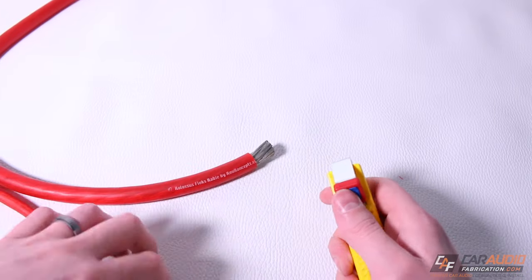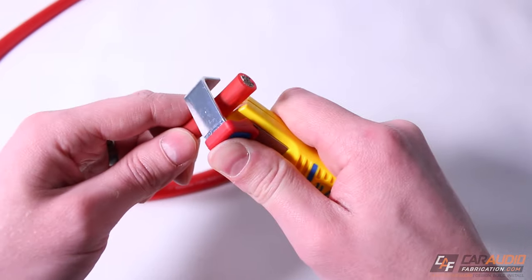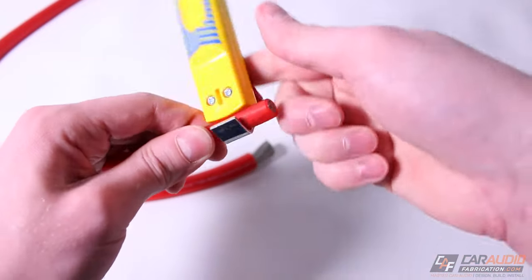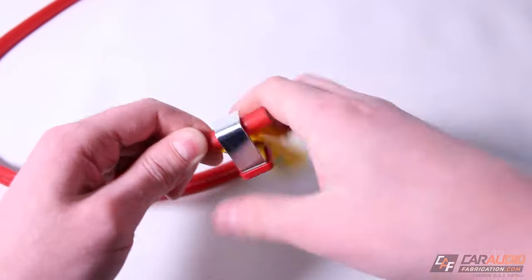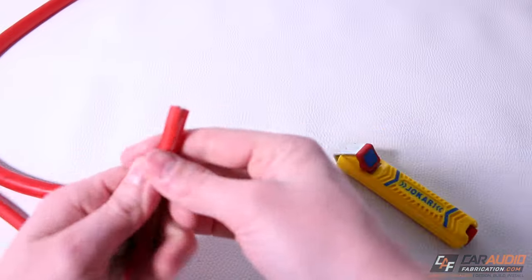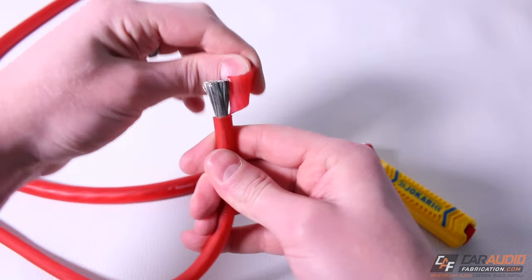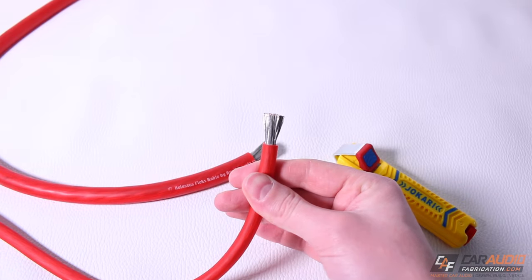That was the zero gauge. Let's see how it works on the four gauge. I've adjusted the blade height. We'll spin around and pull. And now we can strip it away. There we go, another perfectly stripped wire.